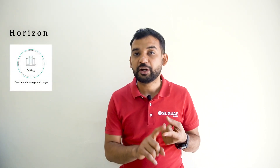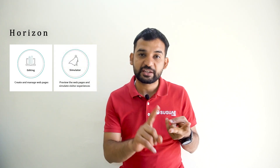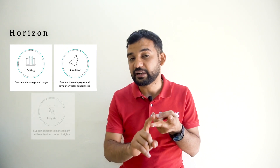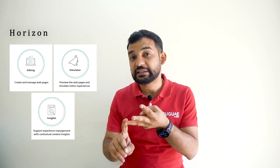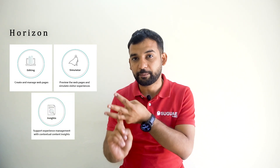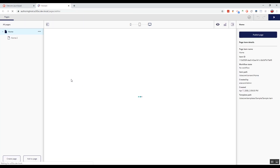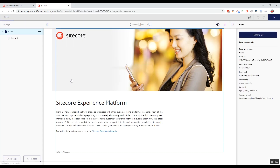We were hearing a lot about Horizon since the last couple of years. Horizon is now a part of Sitecore 9.3. Horizon will contain three modes: editing mode to create and manage your web pages, simulator to preview web pages and simulate visitor experience based on date and device, and insights to see the contextual content insights of the page. Here you see Horizon in editing mode. You can update and change your content per page, navigating through your site and creating new pages using the panel on the left.